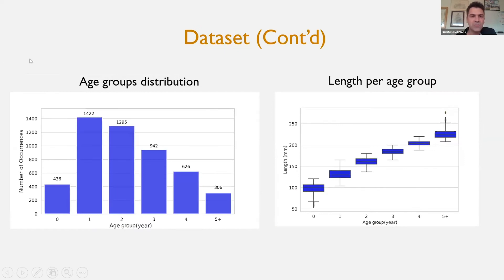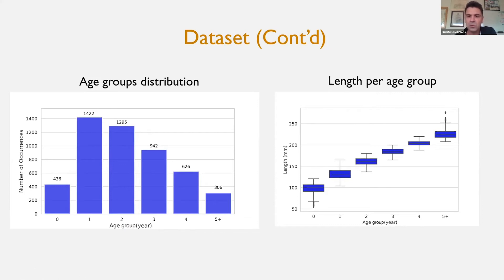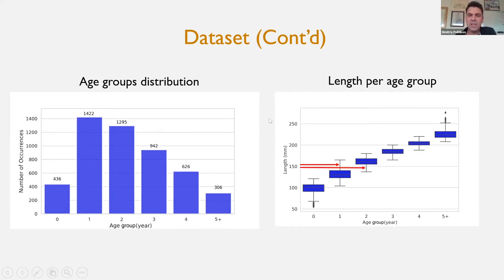An overview of the dataset: on the left you can see a histogram of the distribution of age groups, ranging from zero to five-plus years. In reality we have age groups up to eleven years, but because greater than six years are very few — almost 5% — we merged them into the five-plus age group. On the right, you can see the box plot of length per age group. As age increases, fish length increases. For a fixed length, a fish of 150 centimeters can belong to two age groups, meaning fish length alone cannot be a reliable predictor of fish age.